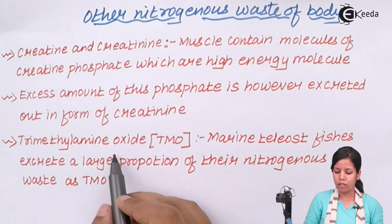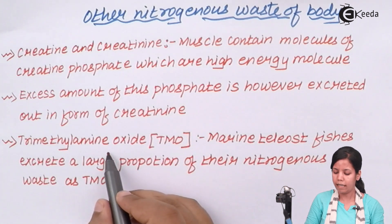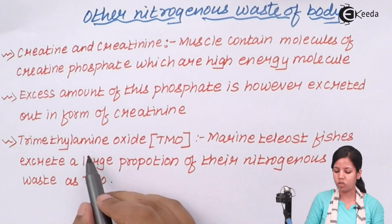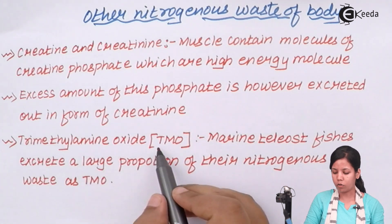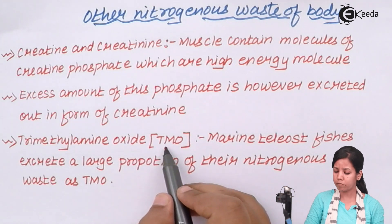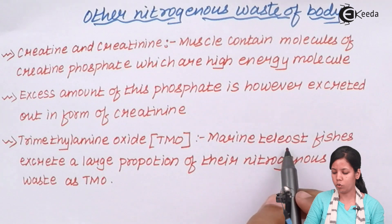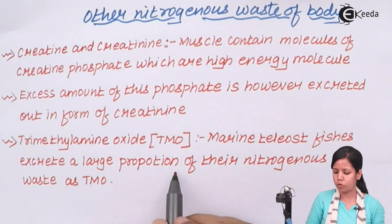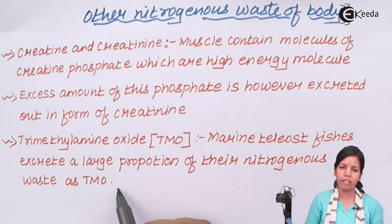Another nitrogenous waste is trimethylamine oxide, or TMO. This trimethylamine oxide is basically present in marine teleost fishes, and they excrete a large proportion of their nitrogenous waste in the form of TMO.